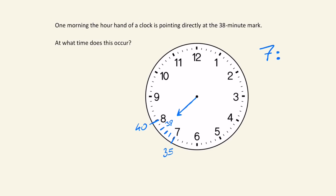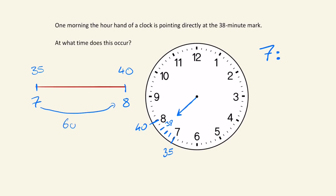We can do that by zooming in between the 7 and 8. If we think about over here — let's say this would be 7 and over here would be 8 — then this would be 35 minutes and this would be 40 minutes. The hour hand would take 60 minutes to move from 7 to 8. It takes 1 hour to go from 7 o'clock to 8 o'clock.